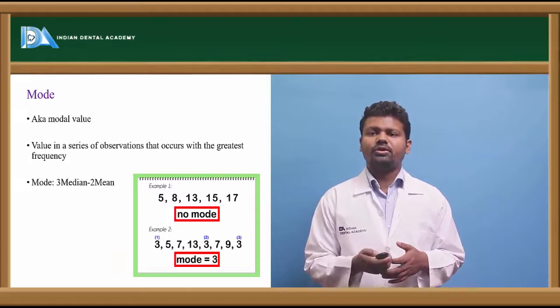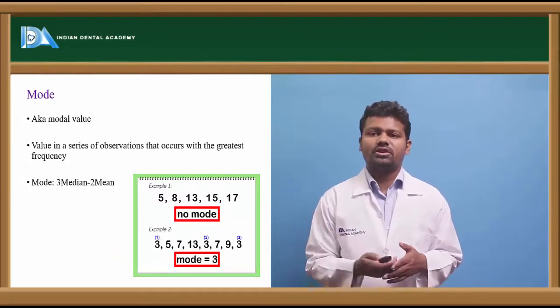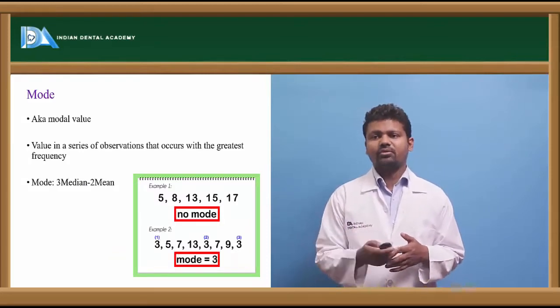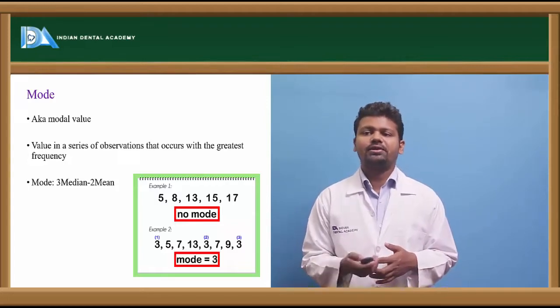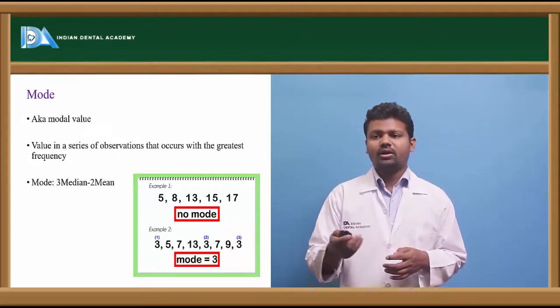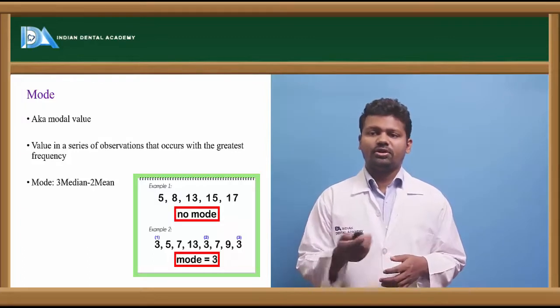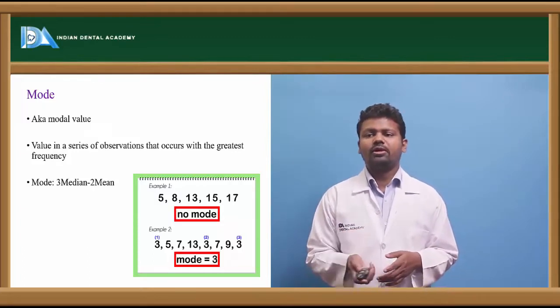The mode is the value in a series that occurs with the greatest frequency. In example 1, there is no mode as there is no repetition. In example 2, the number 3 is repeated, so the mode is 3.